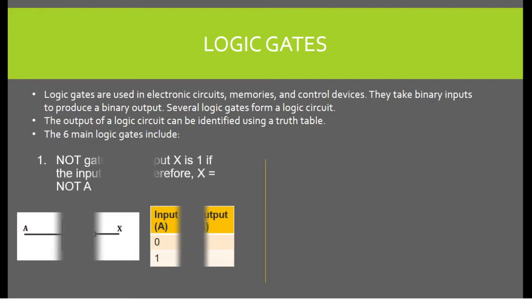NOT gate. The output is X if the input A is 0. Therefore, X equals NOT A. So when the input is 0, the output is 1, and vice versa.